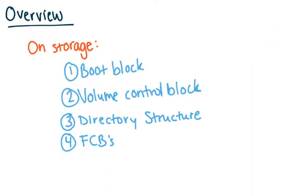On storage, you're going to have your boot block. This is going to tell the OS how to load in your file system. Then the volume control block — there's one per volume, and it's basically a bunch of metadata. So it has metadata on number of blocks that are used, and so on. The directory structure is also going to be on storage, and this is how your file system looks. Your file control blocks and files themselves are also going to be on storage.